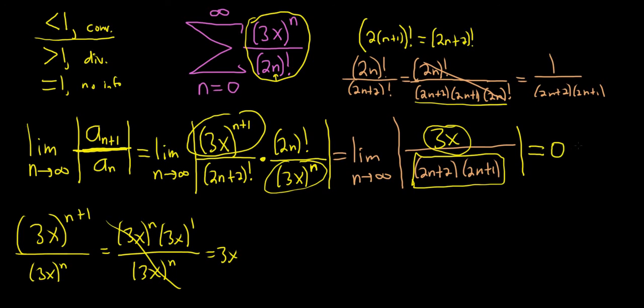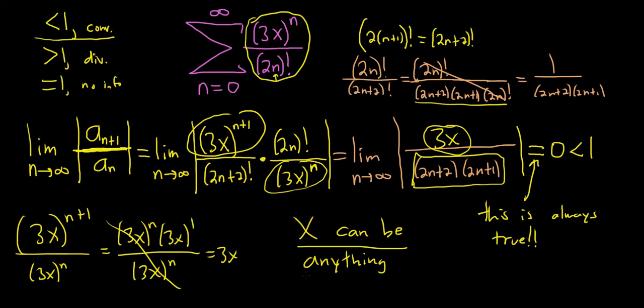But wait a minute. 0 is always less than 1. In particular, that means that this limit always holds. So this is always true. 0 is always less than 1. And so what's x? x can be anything. No matter what x is, this limit is true. You're always going to get 0. So it's always going to be less than 1. So x can be any number. That means the interval of convergence is all real numbers.